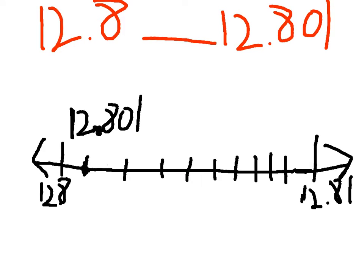Twelve and eight hundred and one thousandths is bigger than twelve and eight tenths. Because it's bigger. Where is this? Twelve and eight hundred and one thousandths is closer to twelve and eighty-one hundredths. So what sign are you going to put here? Draw the sign. Twelve and eight hundred and one thousandths is greater than twelve and eight tenths because it's closer to twelve and eighty-one hundredths on the number line.